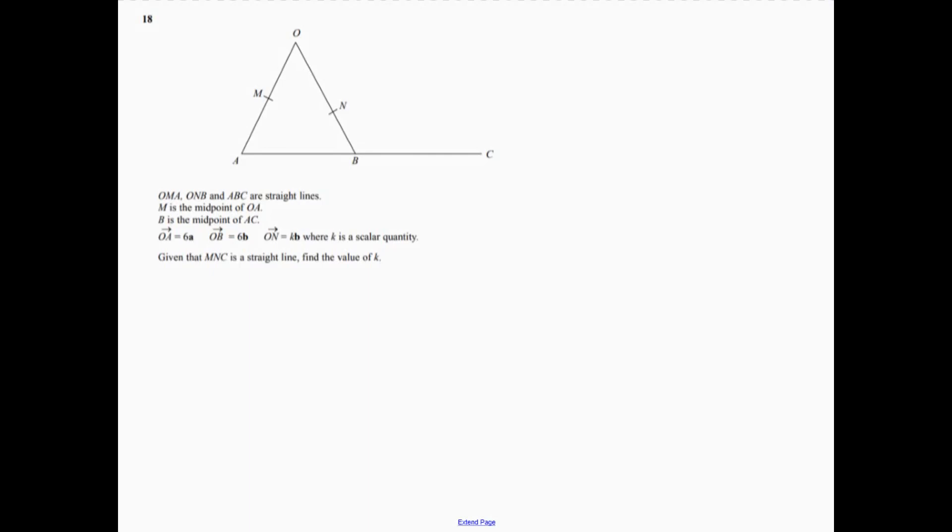To question 18. So let's just think about what we're actually told. So we're told, first of all, that OA is 6a, and we're told that OB is 6b.